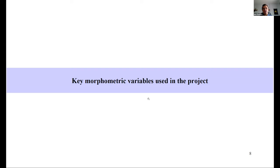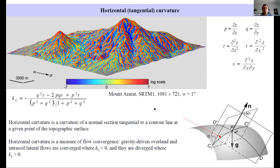First, horizontal or tangential curvature. It's a curvature of a normal section tangential to a contour line at the given point of the topographic surface. Horizontal or tangential curvature is a measure of flow convergence. When horizontal curvature is negative, gravity driving overland and intracellular flows are converged, and these flows are diverged when horizontal curvature is positive.